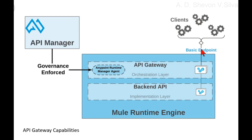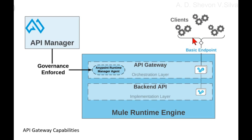Clients are connected through API Gateway. The client interacts with API Gateway, and API Gateway interacts with the backend API. The endpoint mediates between clients and API Gateway.